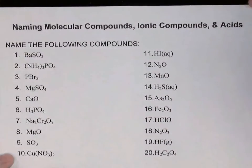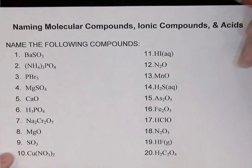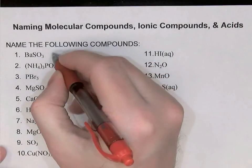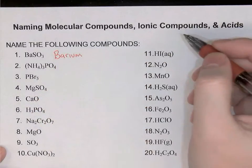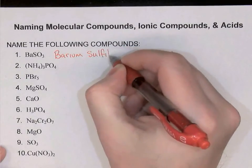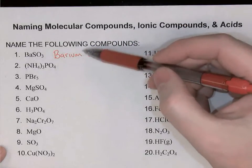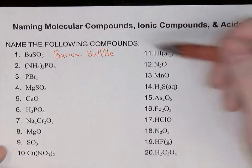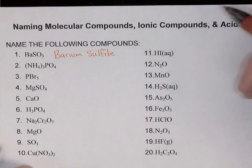The first question: BaSO4. Barium at the beginning of the formula means it's a metal, so this is an ionic compound. Naming ionic compounds, you simply name the cation — barium — and then the anion, in this case sulfate. Sometimes you have to watch out for type 2 cations — metal cations with more than one charge — in which case you'd need to put a Roman numeral in the middle. Barium is an alkaline earth metal; its charge is always 2+, so there's no need for a Roman numeral.